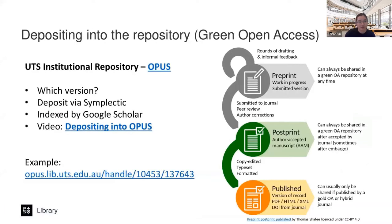Green open access is also referred to as self-archiving. It involves depositing the accepted version of your manuscript into a repository so the public can access a version of your research. The accepted version is the one that's gone through peer review but hasn't yet had journal formatting, typesetting, or table tidying applied — but the research content is there. At UTS, the institutional repository is called OPUS — Open Publications of UTS Scholars — and it connects to Symplectic, the research output management system. You can use Symplectic to deposit directly into OPUS, and a colleague has made a short three-minute video showing the process.